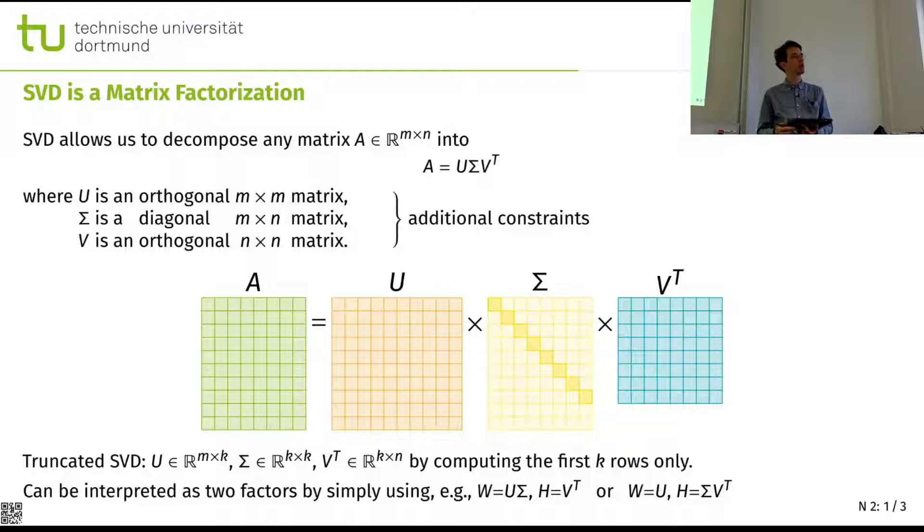Or we can decompose Sigma by taking the square root of the diagonal entries and putting them on both sides. And we are more on the PCA side. So there are different ways of interpreting this in the context of the previous version.